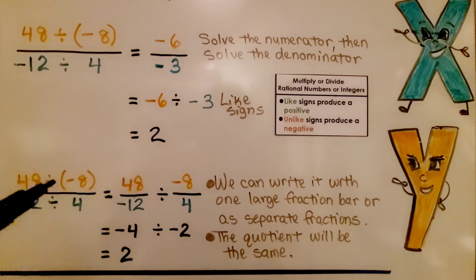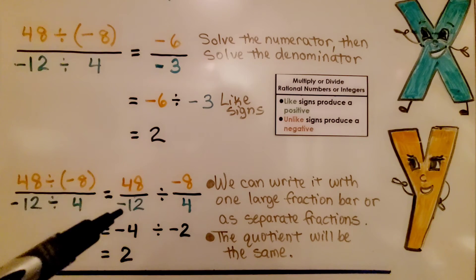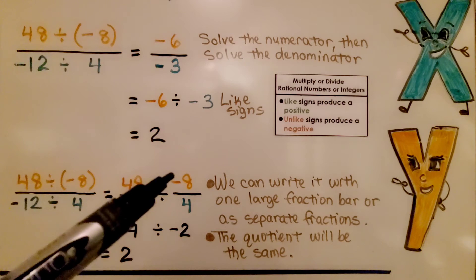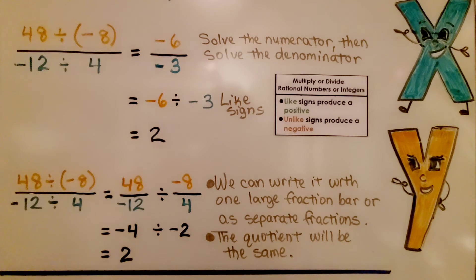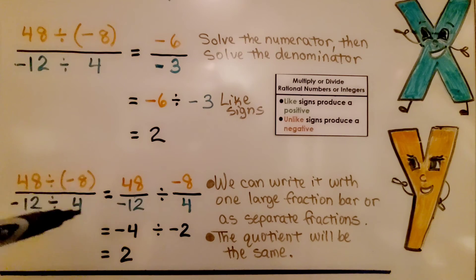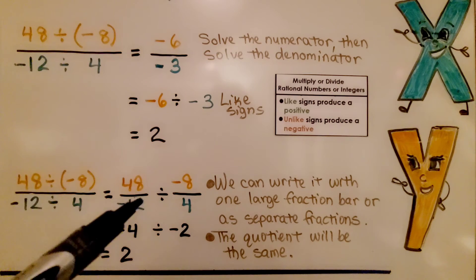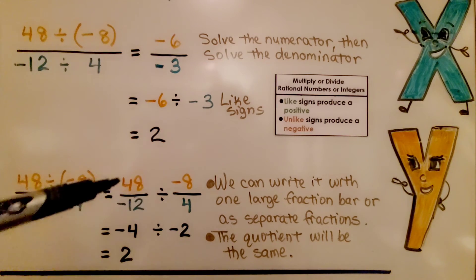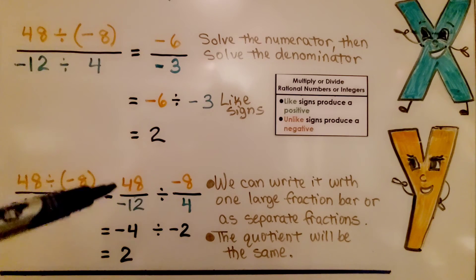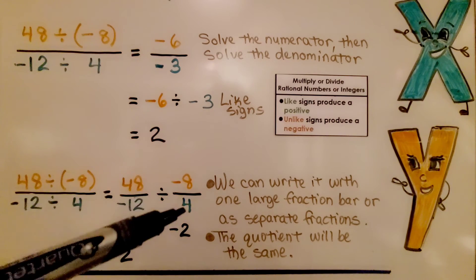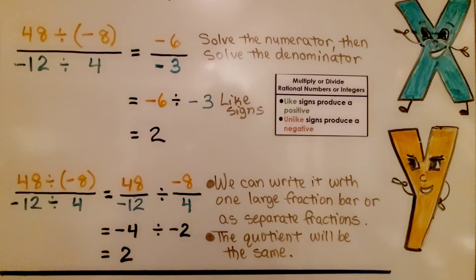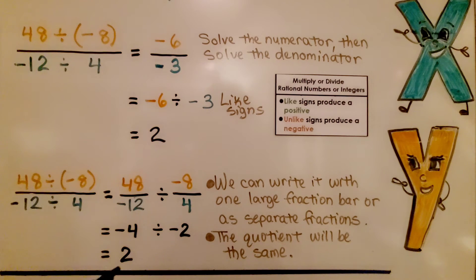It's the same as splitting apart: 48 over negative 12 and negative 8 divided by 4. We've got 48 over negative 12, and negative 8 over 4 — both being divided. We can split this big fraction bar into two simple fractions. 48 divided by 12 is 4; they have unlike signs, so that's negative 4. And 8 divided by 4 is 2; they have unlike signs, so it's negative 2. Negative 4 and negative 2 have like signs, so it's going to be a positive 2.